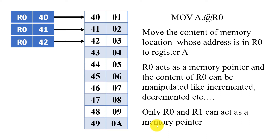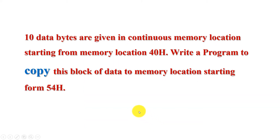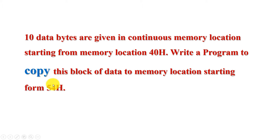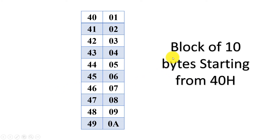Let us now talk about an example to understand and implement memory pointers in the 8051. The program statement: 10 data bytes are given in continuous memory locations starting from memory location 40h. Write a program to copy this block of data to memory locations starting from 54h. A block of 10 data bytes is given — these are the 10 addresses and corresponding data bytes.